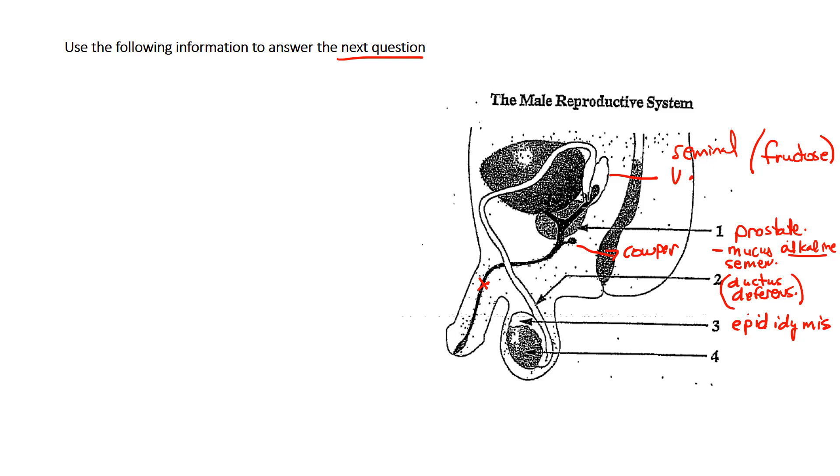By the way, this vas deferens or ductus deferens has a very similar function to the female oviduct or fallopian tubes in the fact that they both transport sex cells. Sometimes they'll ask you to look at similarities and differences between the male and female reproductive system.